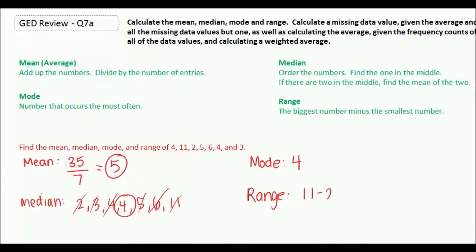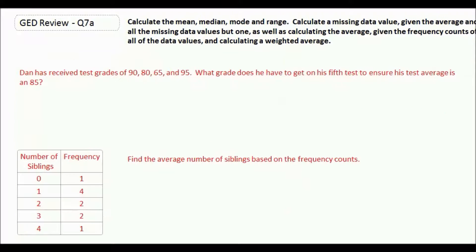And the range is the biggest number minus the smallest number, so that would be 11 minus 2, which gives you 9. Now often you'll be given a set of data, you'll be told what the average is, and then you'll have to find a missing part of the data.